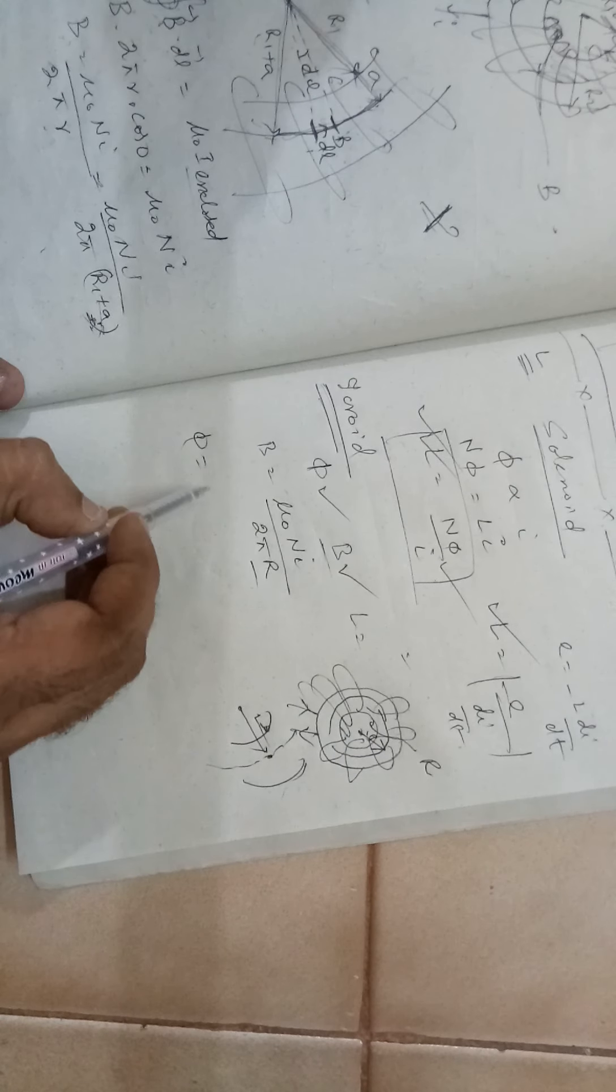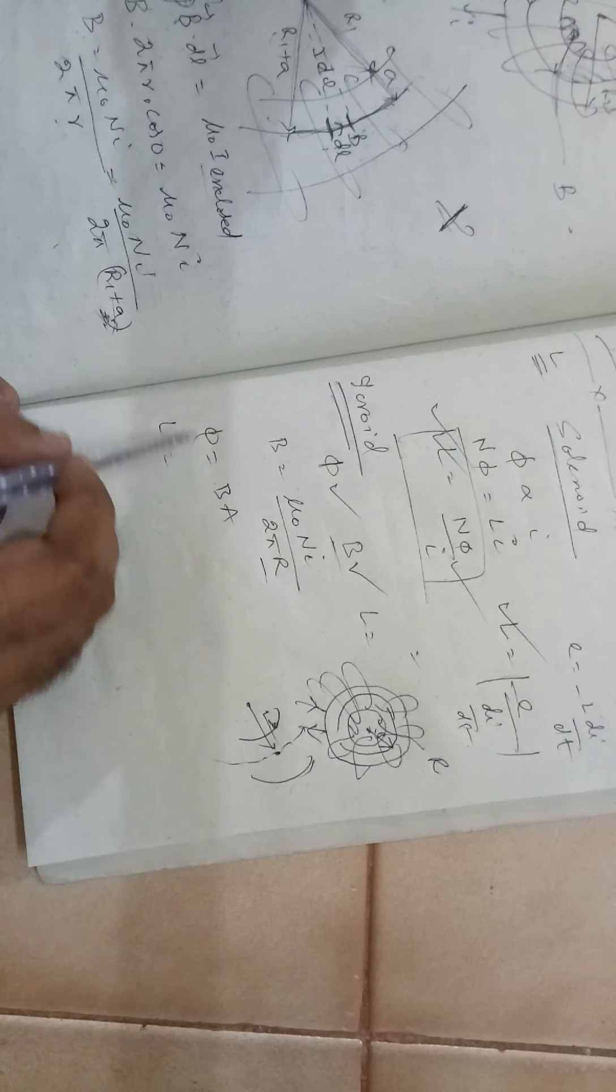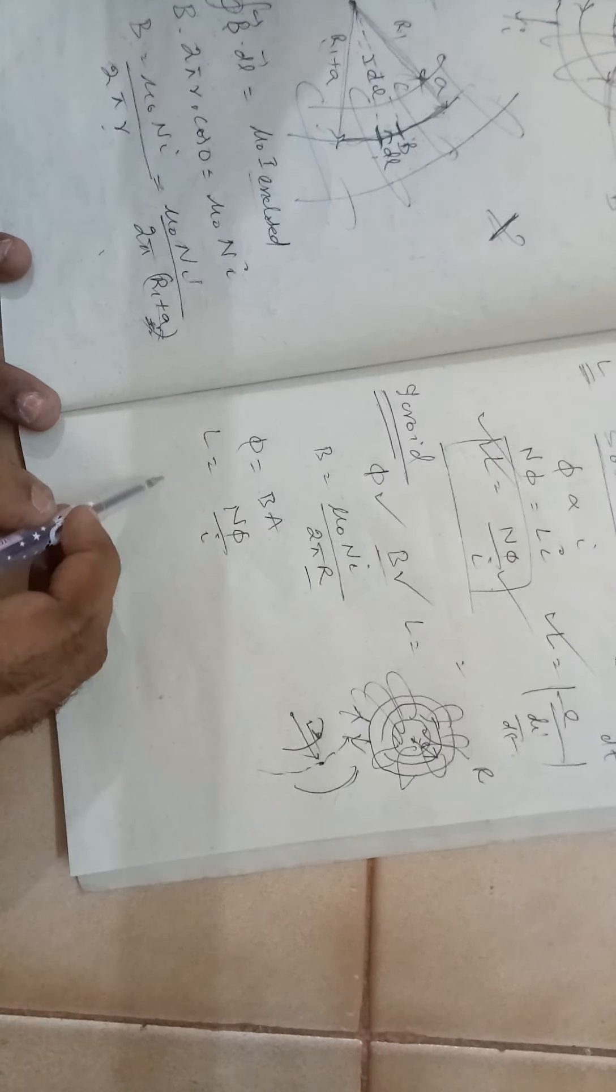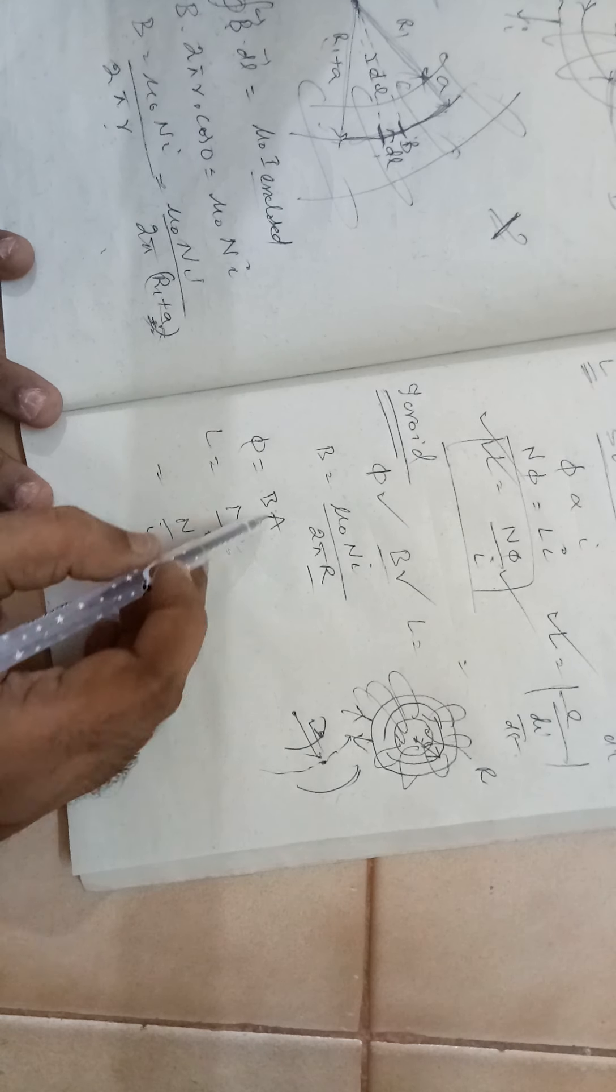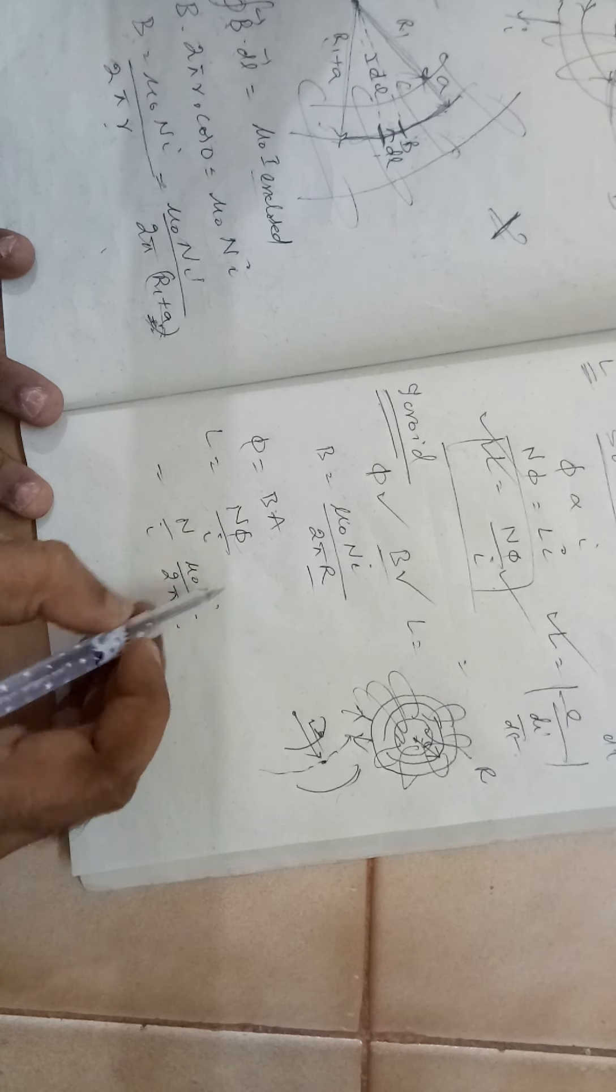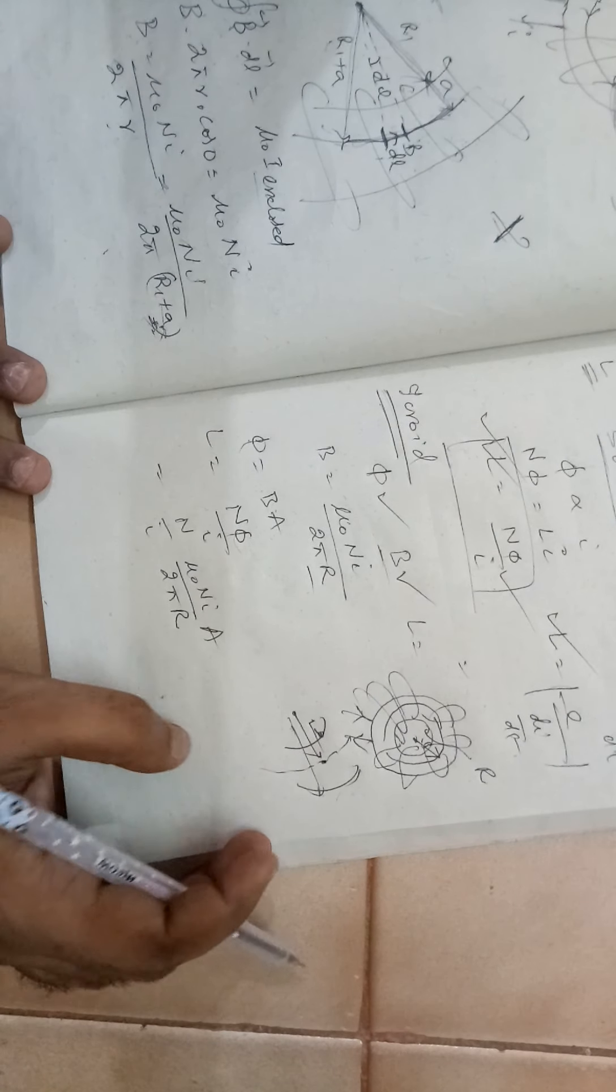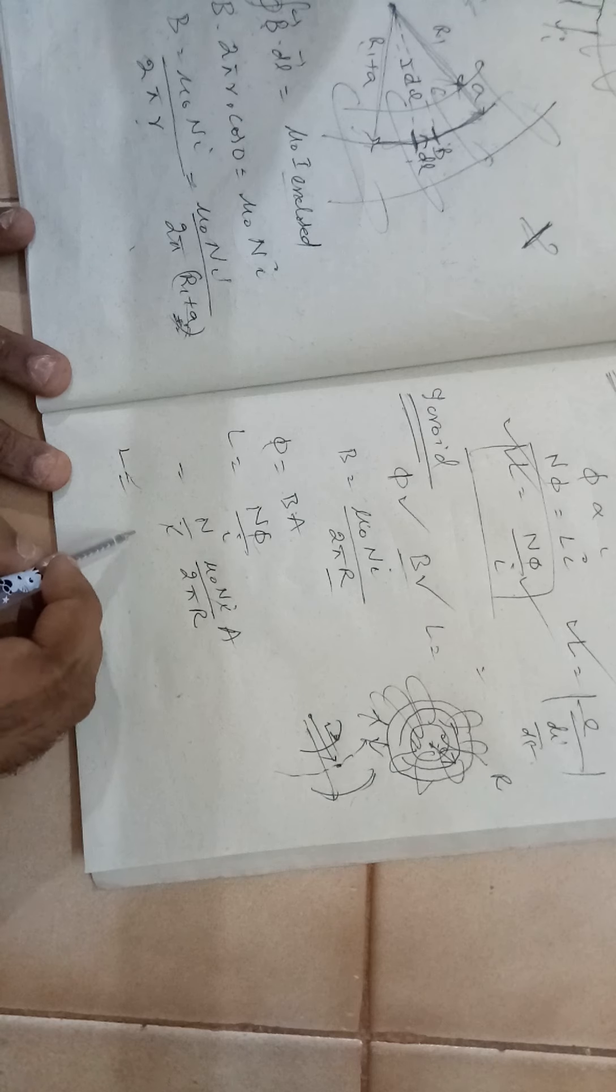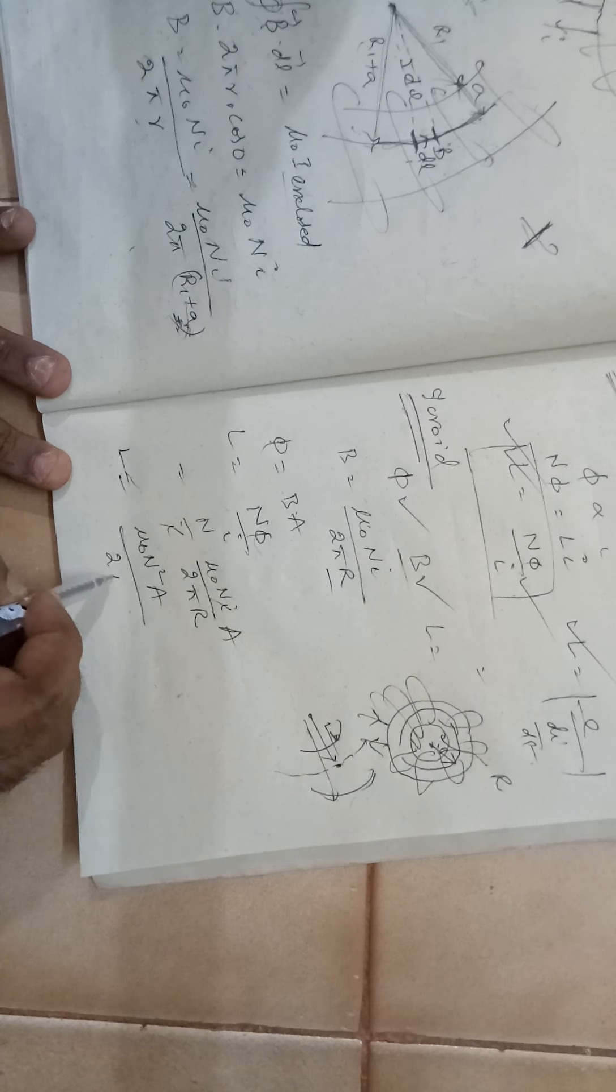Now, phi is equal to B multiplied by area. We can directly write L is equal to, suppose there are N terms, N phi divided by I. So N by I into, let us put this value of phi. It is B multiplied by A. B is mu naught N I divided by 2 pi R. That is the B value. And area, the cross section area, we need to put here. Here I gets cancelled. L is equal to mu naught N square A by 2 pi R.